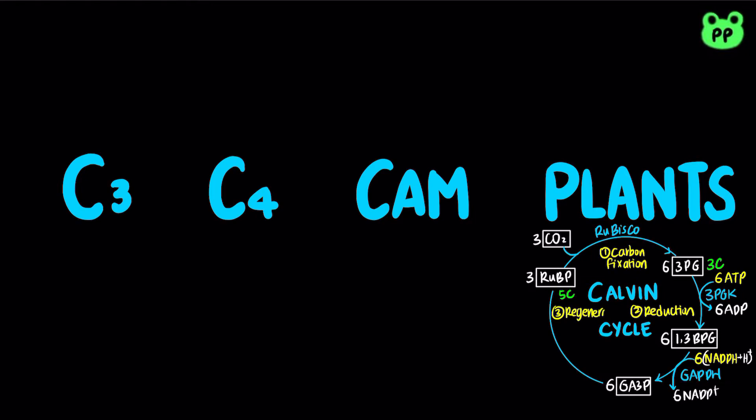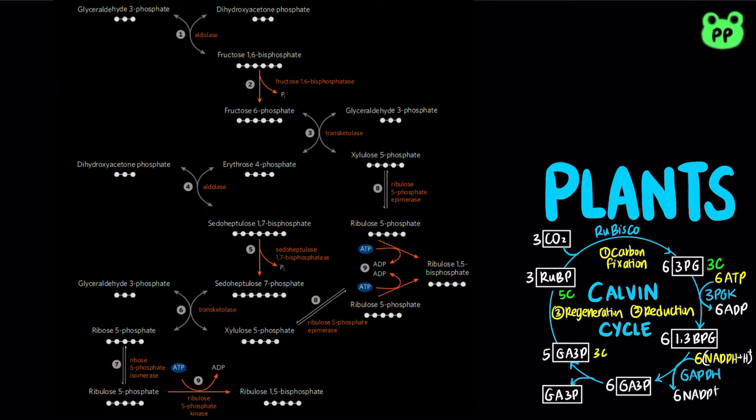The third stage involves the regeneration of RuBP from glyceraldehyde 3-phosphate. Only one molecule of glyceraldehyde 3-phosphate is produced from each cycle. The remaining five molecules are reconverted to three molecules of RuBP through a series of steps that resemble the pentose phosphate pathway, which involves the net hydrolysis of three ATP in the last step, converting ribulose 5-phosphate to ribulose-1,5-bisphosphate.